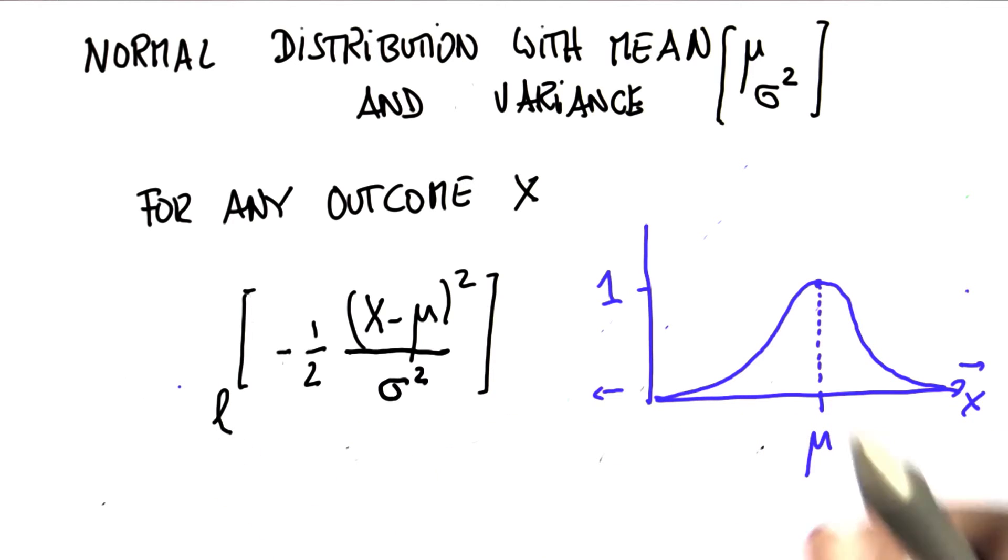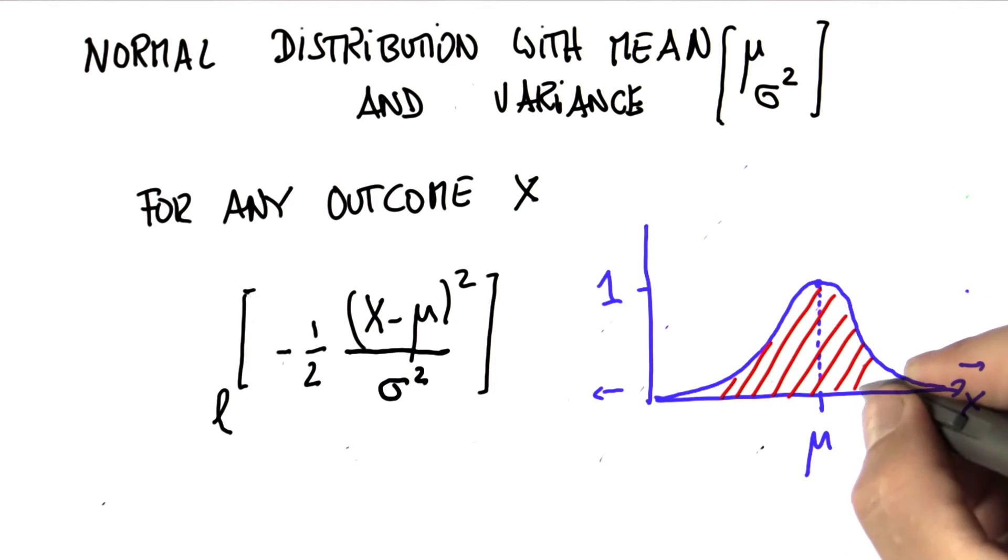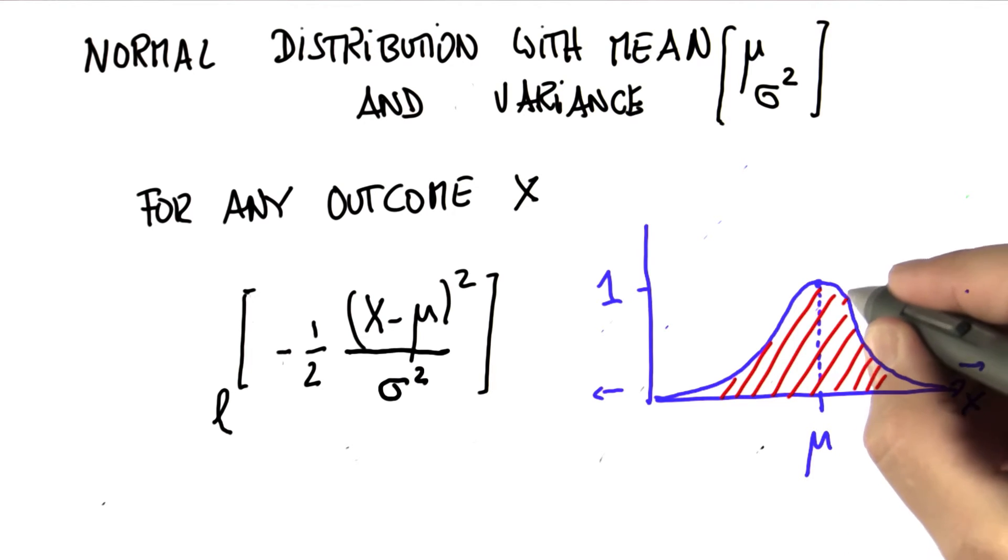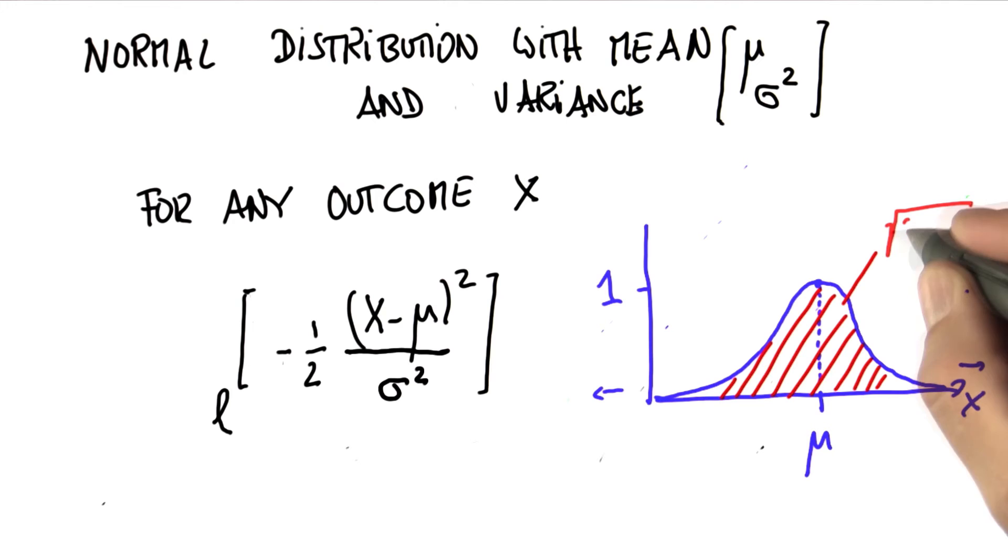There's one flaw here, and I'll tell you about the flaw without going into detail. That is, the area underneath this curve doesn't always add up to 1. In fact, without proof, it adds up to 2 pi sigma square.